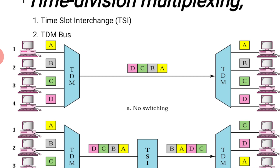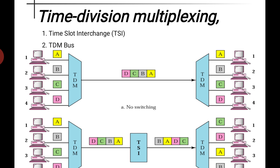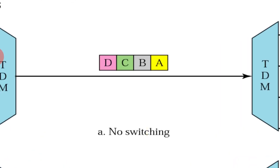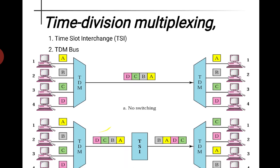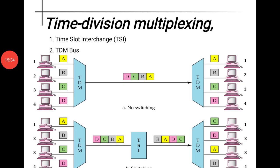The second part of circuit switching is time division switching, which includes time division multiplexing (TDM). We assume each device sends data in its assigned slot. In practical scenarios, the mapping may change — for example, device 1 might send to device 3, and device 2 to device 4. Time division switching uses time slots shown as different colors — yellow, gray, green, pink. Time division switching is further of two types: time slot interchange (TSI) and TDM bus.